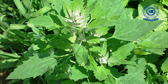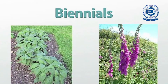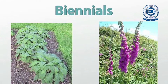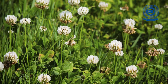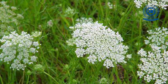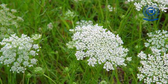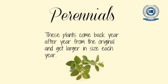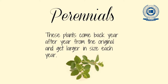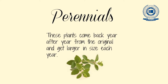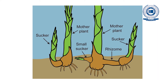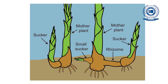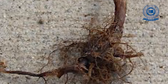Biennials complete their vegetative growth in the first season, then flower and set seeds in the succeeding season and then die. Example: Alternanthera echinata or Daucus carota. Perennials live for more than two years and may live almost indefinitely. They propagate not only through seeds but also by underground stem, root, rhizome, tubers, etc.